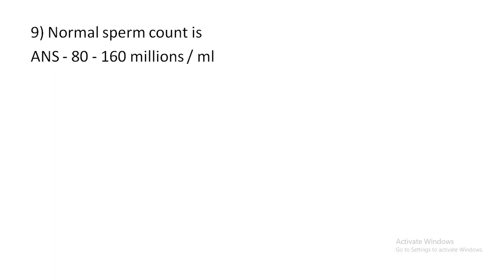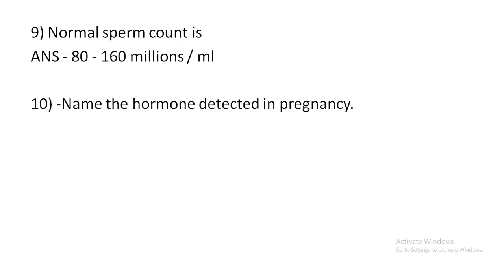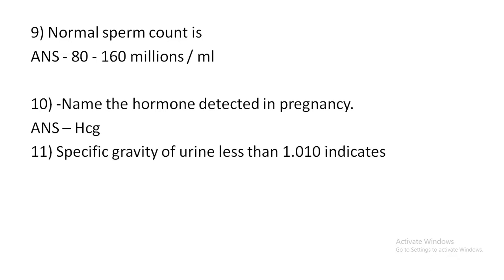Ketone bodies in urine at 160 million/ml. The hormone detected in pregnancy is HCG. Specific gravity of urine less than 1.010 indicates diabetes insipidus.